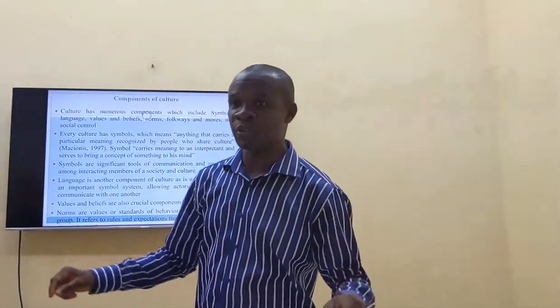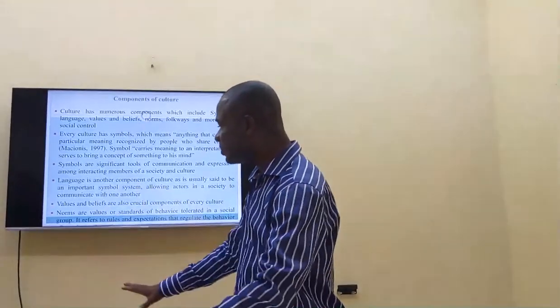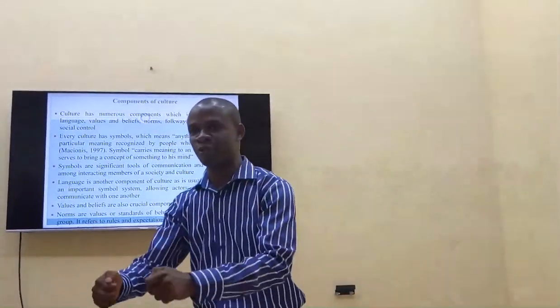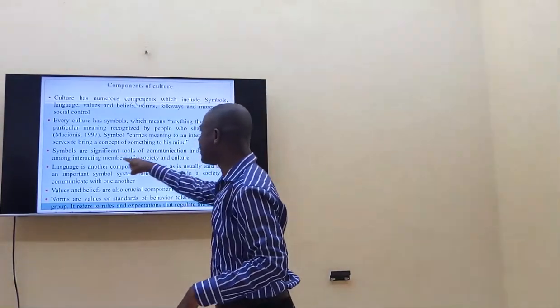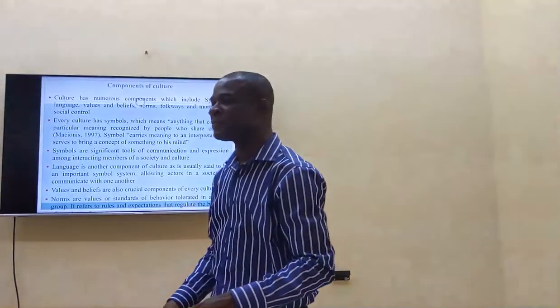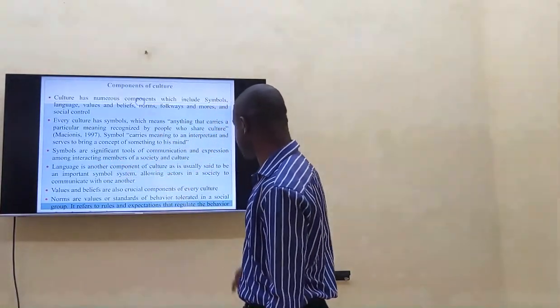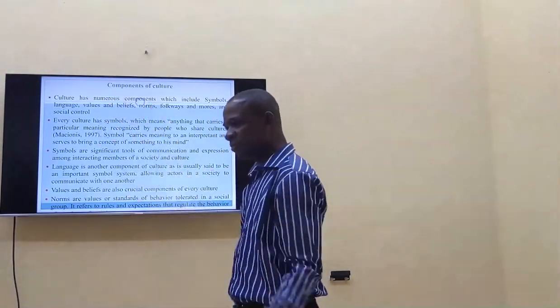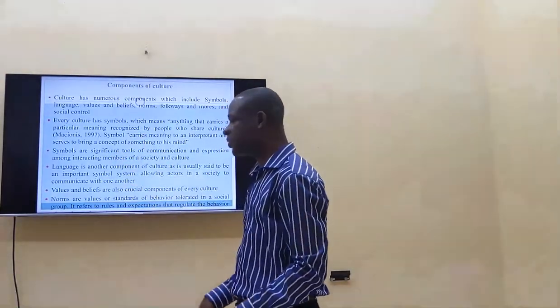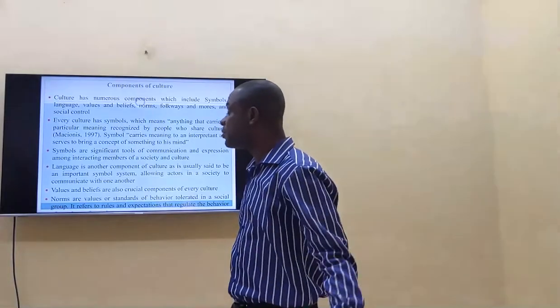For example, in some cultures, if you come to a person's place and the person is absent, you can use a palm frond placed at the door, so that by the time the person returns and sees it, they understand that somebody came. But in another culture, a palm frond may not signify such a thing. That is what we call a symbol — it carries a particular meaning recognized by the people. In social description, symbols are significant tools of communication and expression.